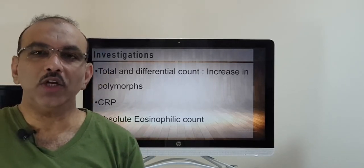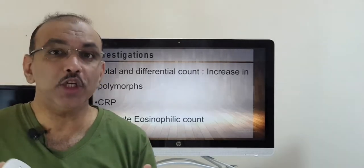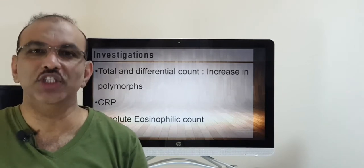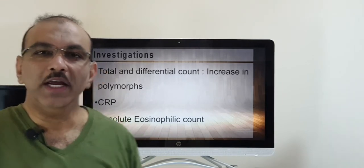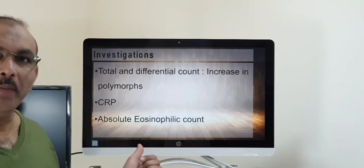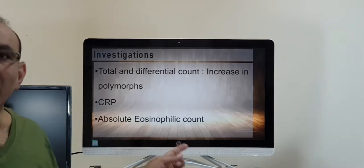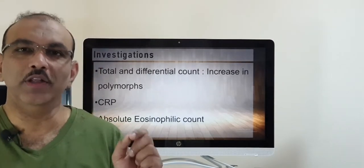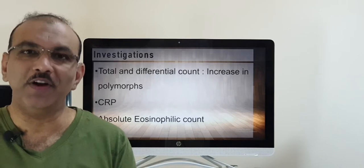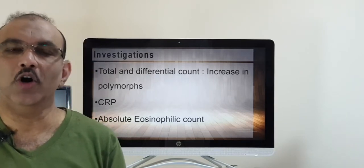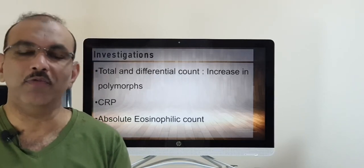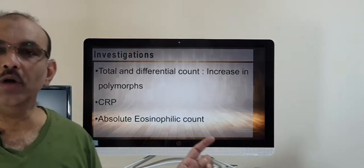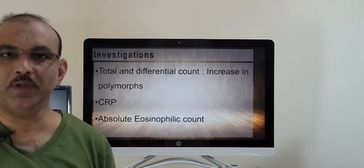One of the common predisposing factors for chronic rhinosinusitis is allergic rhinitis. If you do an absolute eosinophilic count and the patient happens to be allergic, or if they are suffering from allergic rhinitis or allergic form of rhinosinusitis, the count will be increased.